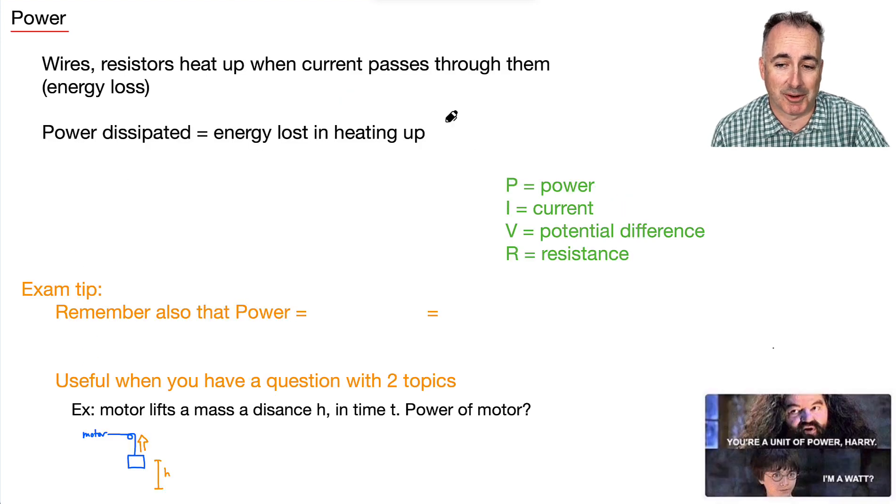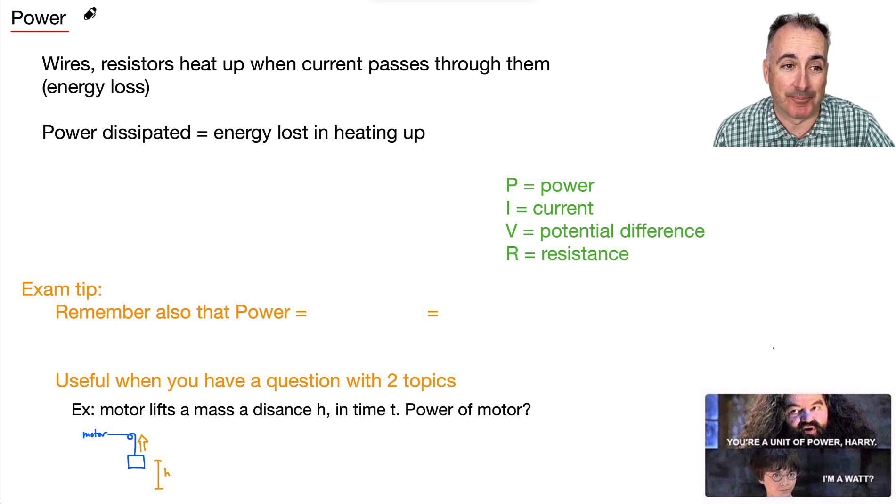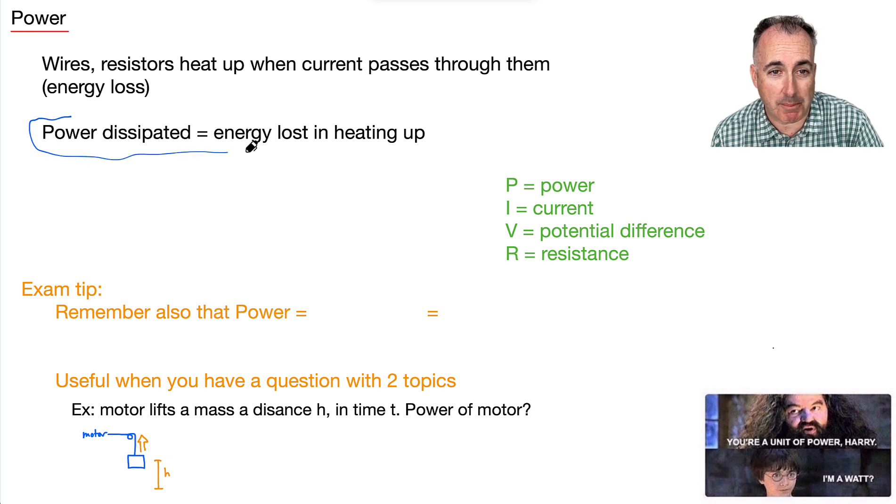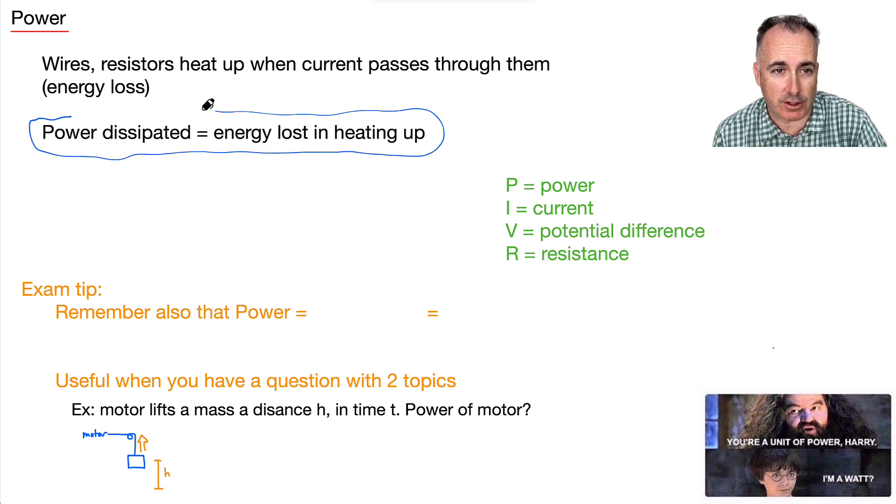Okay, this one is awesome. You're a unit of power, Harry. I'm a what? That's because we're going to talk now about power. And that's because if you run current through something, through a wire or resistor or whatever, they heat up when the current passes through them. You can feel that in just about any circuit. And if they heat up, that means there must be energy loss. So we call this energy loss a power dissipated. That's the sort of phrasing that we use here. So power dissipated, that's the energy loss due to heating up.